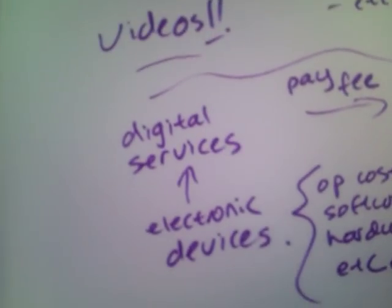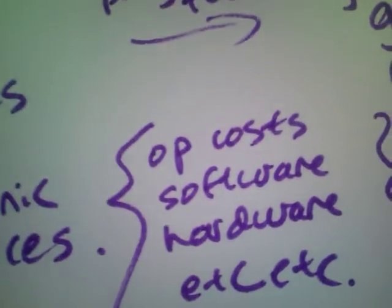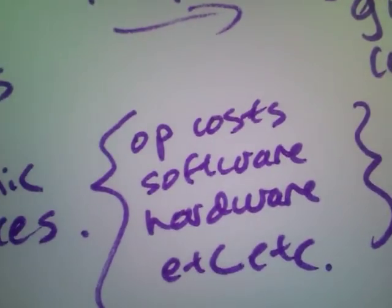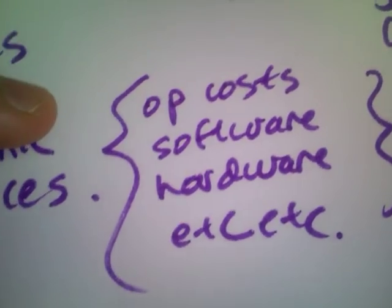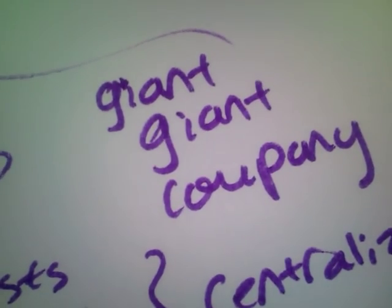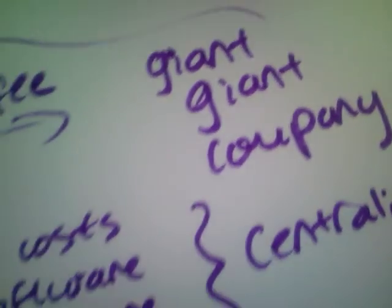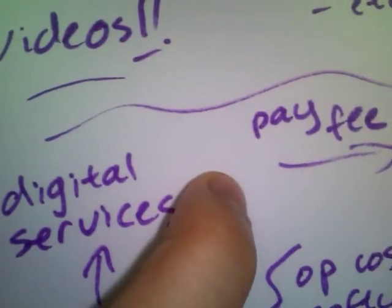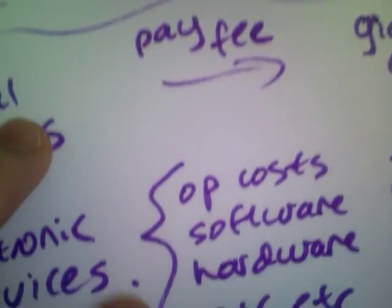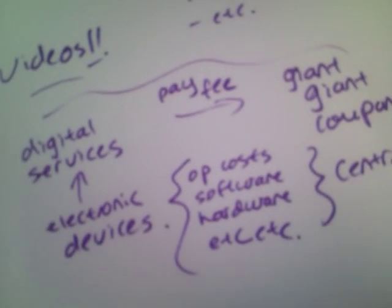Let's scale back and look at the general problem. We all want digital services, and that requires electronic devices such as a computer or an Xbox 360. These cost us software, hardware, all these different costs. So why don't we have it all centralized in this one humongous giant computer, giant server — whatever you want to call it. And this is the cloud. This becomes the cloud. All we have to do is pay the fee for whatever digital services we want. We don't have to pay for this humongous cost that can do all these other different things, but we never needed it. And that is cloud and cloud computing.